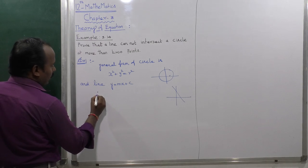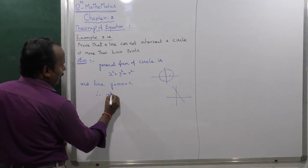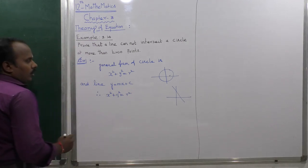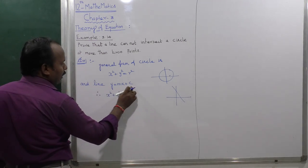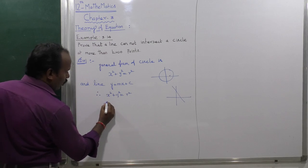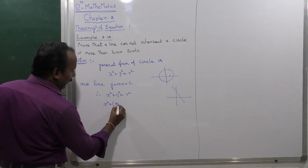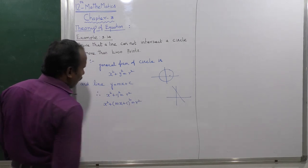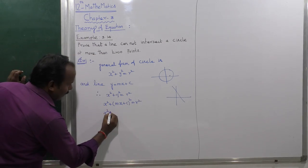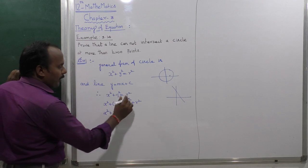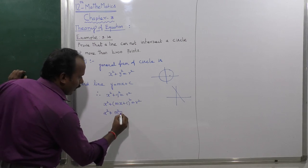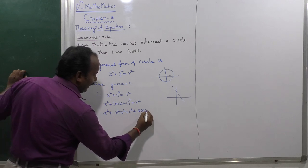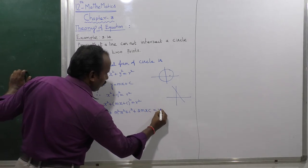So the equation of the circle is x squared plus y squared equals r squared. For the line, y equals mx plus c, so we replace y with mx plus c, giving x squared plus (mx plus c) squared equals r squared. Expanding: x squared plus m squared x squared plus 2mxc plus c squared equals r squared.